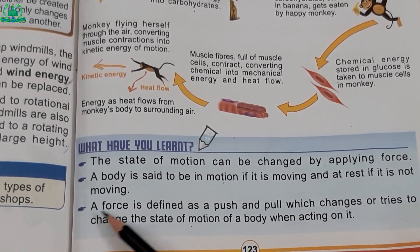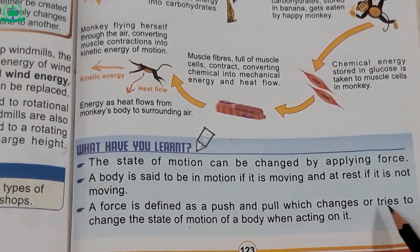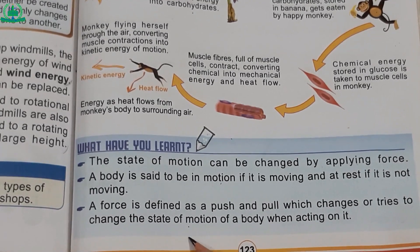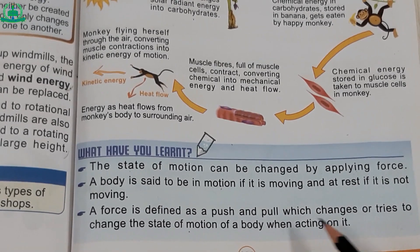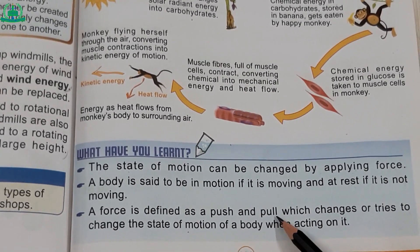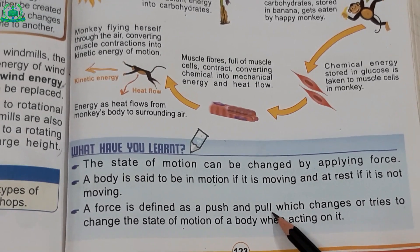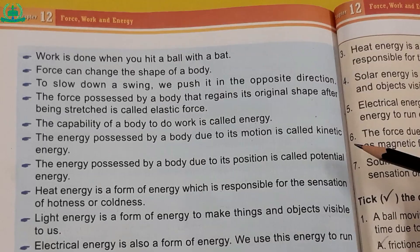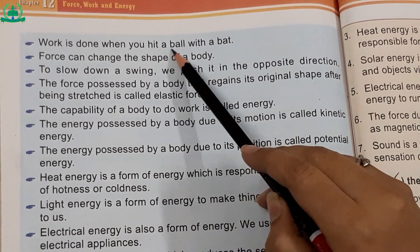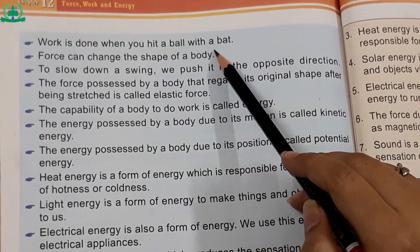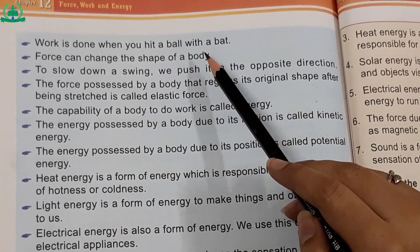Number three — a force is defined as a push or pull which changes or tries to change the state of motion of a body when acting on it. (Force woh taqat hoti hai jis ke push or pull se body ki harakat tabdil hoti hai ya hone ki koshish karti hai jab is par force apply ho.) Number four — work is done when you hit a ball with a bat.